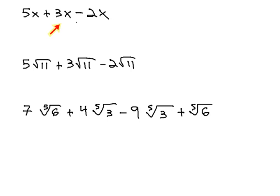With a problem like 5x plus 3x minus 2x, we recall from variables, as long as they all have like terms, they all have an x, we can add and subtract the numbers in front. 5 plus 3 is 8, minus 2 is 6x.